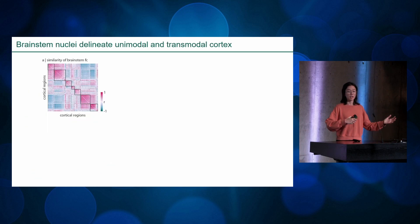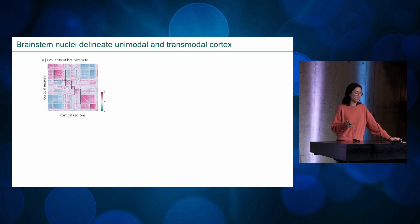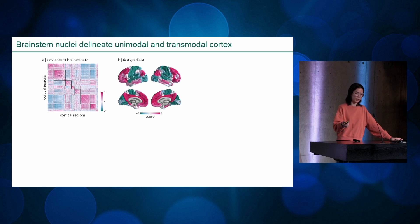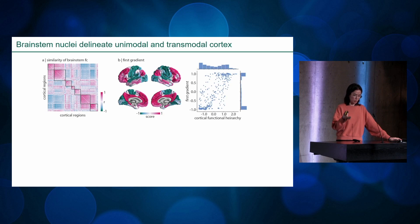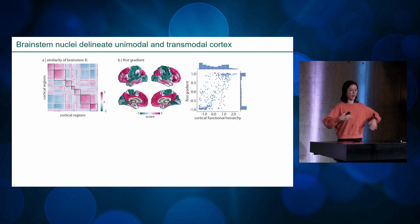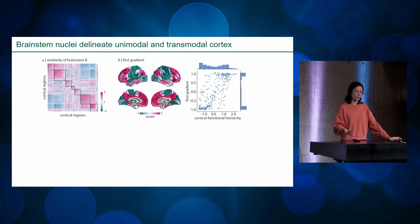On the flip side — previously I looked at how brainstem nuclei are similarly connected to the cortex; now how are cortical regions similarly connected to the brainstem. Using the Schaefer 400 parcellation ordered by intrinsic functional networks, the first gradient looks exactly like the familiar unimodal-to-transmodal functional gradient. Notably, this classical gradient is based on cortical-cortical connectivity, but my brainstem-based version is much more bimodal. My hypothesis is that the brainstem anchors or seeds the extremes of this gradient, while cortical-cortical connectivity fills in the gradual shift from unimodal to transmodal regions.